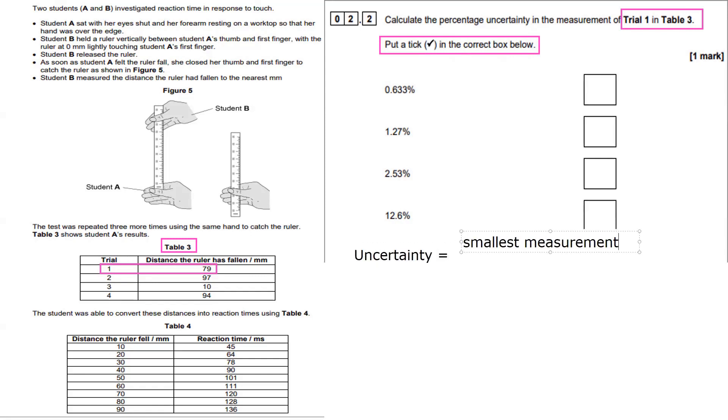So we've been asked, calculate the percentage uncertainty in the measurement of trial 1 in table 3. I've highlighted the relevant data in purple here.